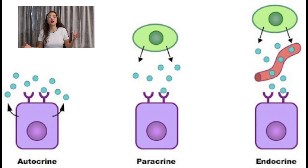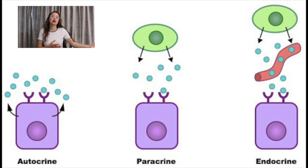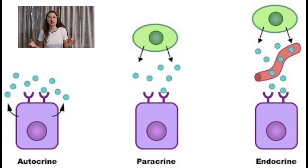Paracrine signaling is when nearby cells interact with each other. Cells that aren't very far apart release molecules into the environment, which can bind to a nearby cell, allowing them to learn about the cells around them. Finally, we have endocrine signaling, sometimes referred to as systemic signaling. This happens across the body — molecules are released, perhaps entering the bloodstream, and travel long distances to send signals to cells in different systems.